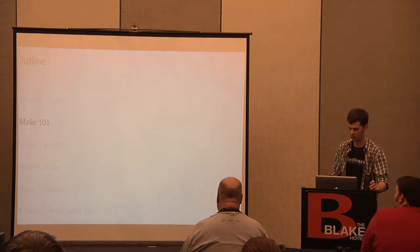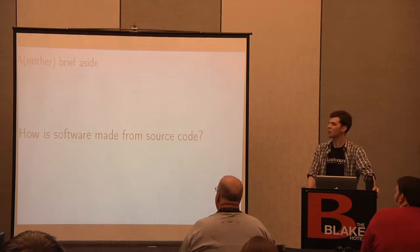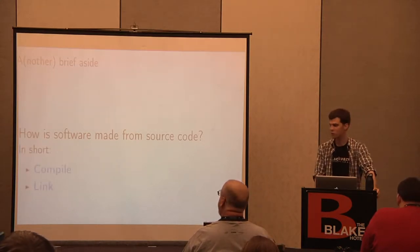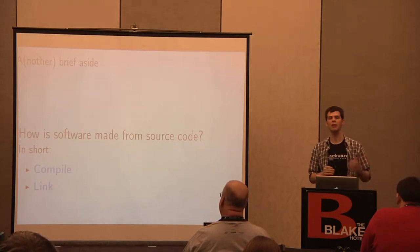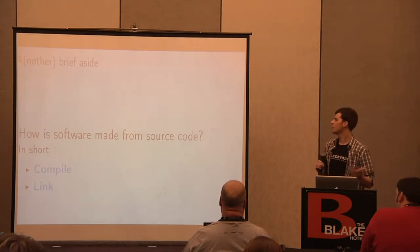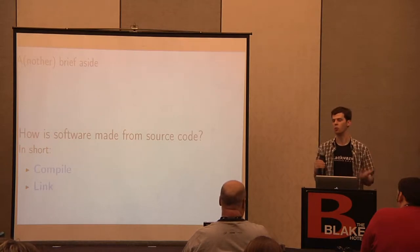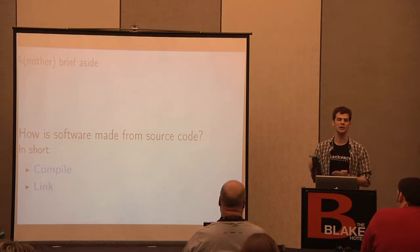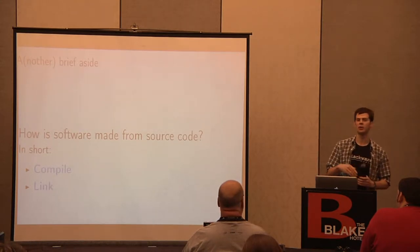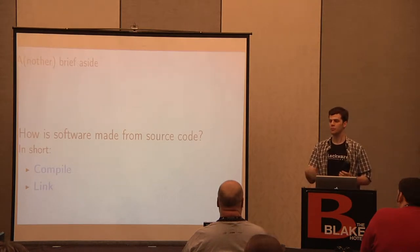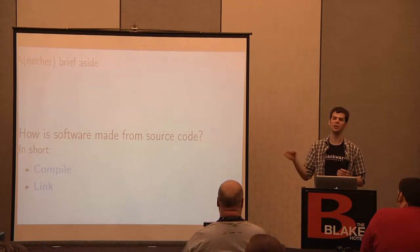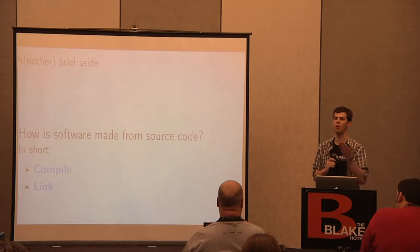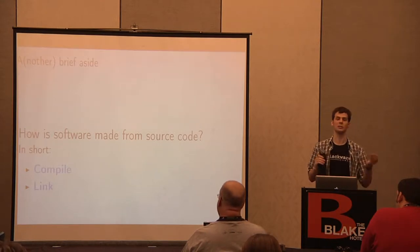Now, make 101. How is software made from source code? It's traditionally done in two steps: a compiling stage and a linking stage. In the compiling stage, source code is turned into binary object files. In the linking stage, copies of the binary files are combined into a library or executable. Each compilation step for each file is independent, so if you update one file, you only need to recompile that one and update what depends on it — not everything. This is why make is used for software so much.